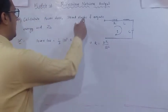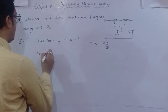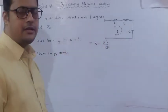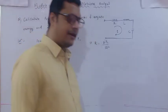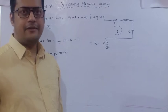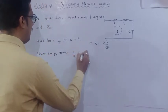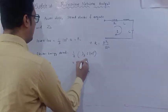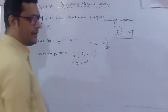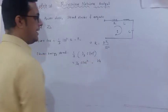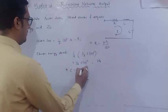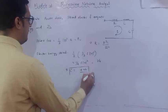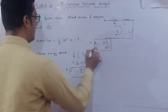Electric energy is stored in the capacitance. The instantaneous value is half·C·V², but the average electric energy stored is one-quarter times C times mod(V)². So the energy stored due to the electric field is WE_avg equals (1/4)·C·|V|². To find the capacitance if energy is known: C equals 4·WE divided by mod(V)².